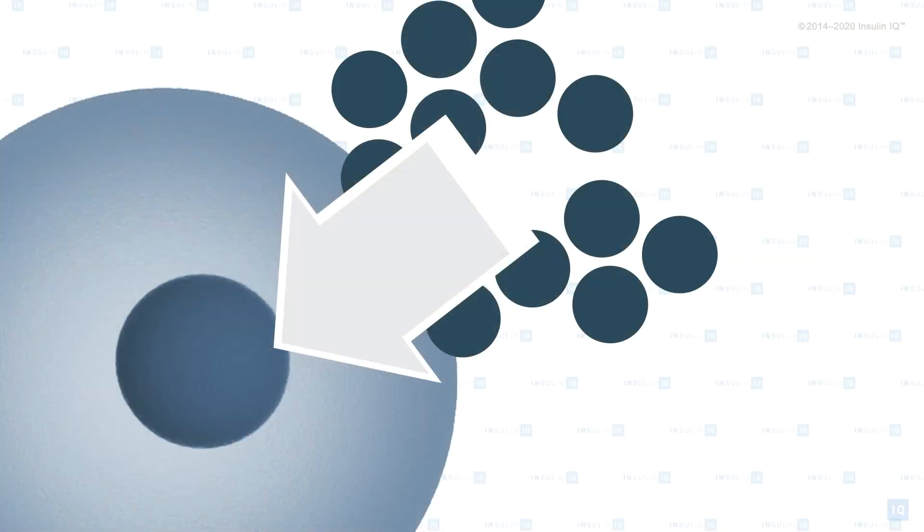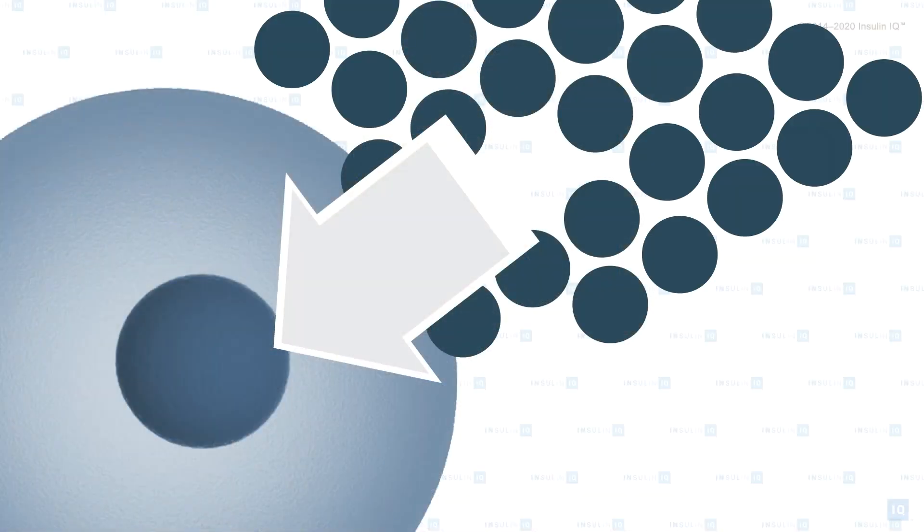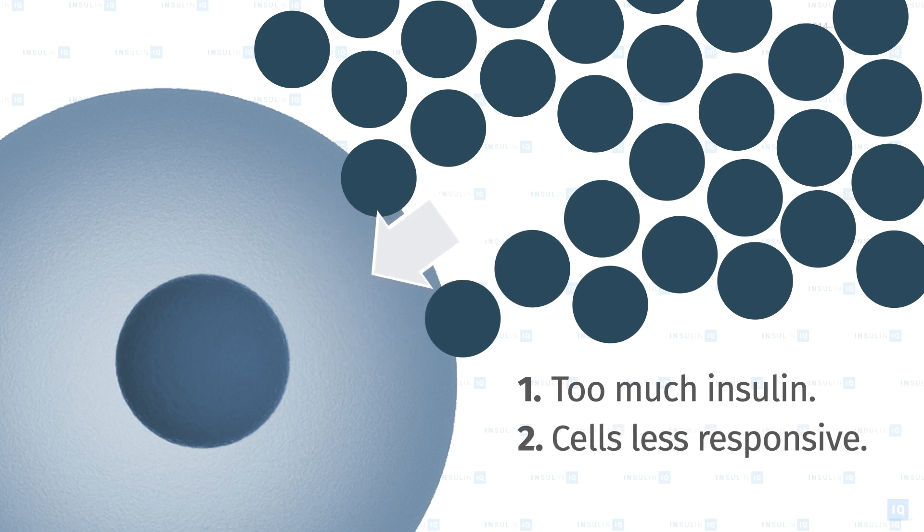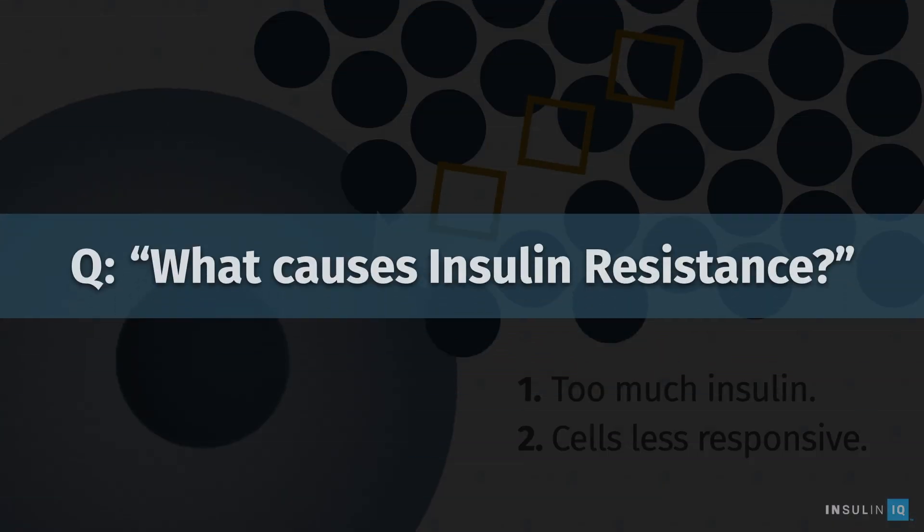In our last lesson we talked about what insulin resistance is. In summary, when you're insulin resistant there are two things going on in your body. First, the levels of insulin in your bloodstream are too high, and second, your cells are less responsive to all that insulin. So the question is, what causes insulin resistance? The answer to that question is too much insulin in your bloodstream.